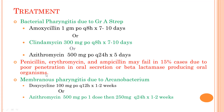For membranous pharyngitis due to Arcanobacterium: doxycycline 100mg 12-hourly for 1–2 weeks, or azithromycin — first dose 500mg, then 250mg once daily for 1–2 weeks.